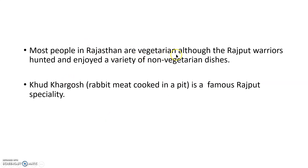Most people in Rajasthan are vegetarian, although the Rajput warriors hunted and enjoyed a variety of non-vegetarian dishes. Some Rajput warriors ate non-vegetarian dishes. Kud Khargosh — rabbit meat cooked in a pit — is a famous Rajput speciality. They dig the earth and cook the rabbit meat in that pit.